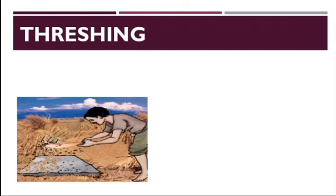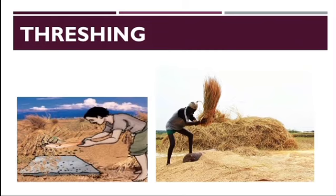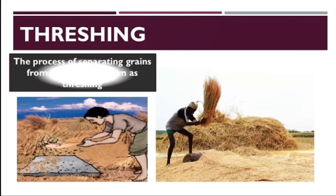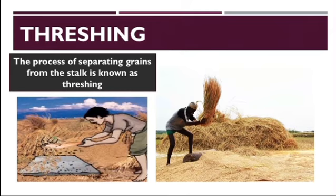Threshing. You must have seen bundle of wheat paddy stack lying on the fields after harvest. Have you pondered how farmers separate grains from these stacks? Once the wheat or paddy crop is harvested, the farmer stacks them together to form bundles. Then he leaves the bundle to dry in the sun. Once the stock is completely dry, the farmer beats them against the hard floor to free the grains. And this process of separating grains from the stock is known as threshing.